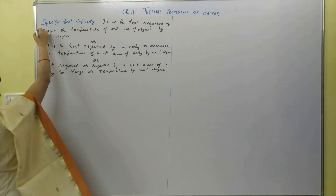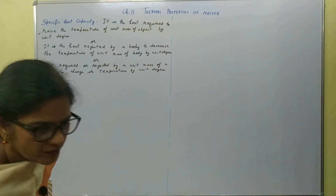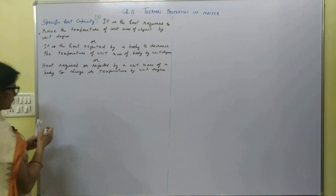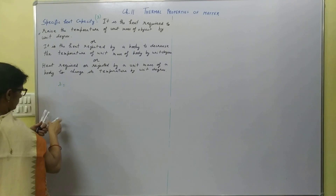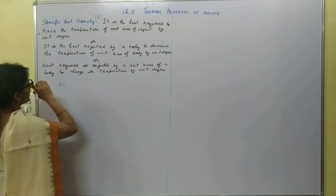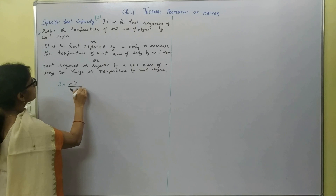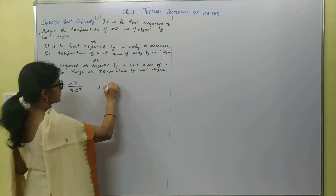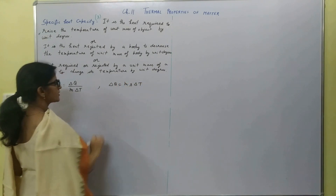So we can combine these two definitions. Heat required or rejected by a unit mass of a body to change its temperature by unit degree is specific heat capacity. This is the one you have studied in your lower classes. This specific heat capacity is represented by small s in your NCERT. The formula is delta Q is equal to M s delta T.